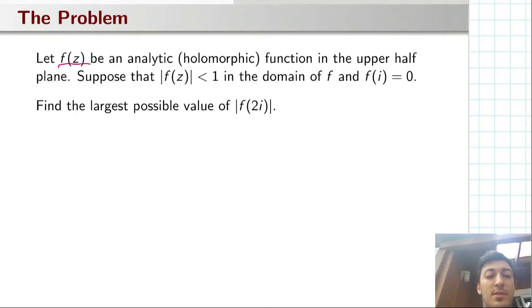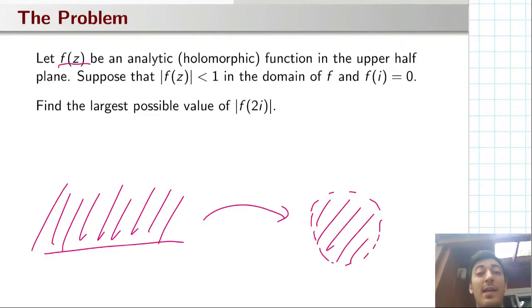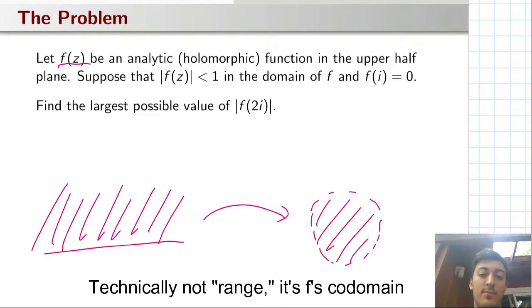So we have f(z), some analytic or holomorphic function, and it's defined in the upper half plane. Suppose that the modulus of f(z) is bounded above by 1—so the range is the disk, basically. And we also know that f(i) = 0.